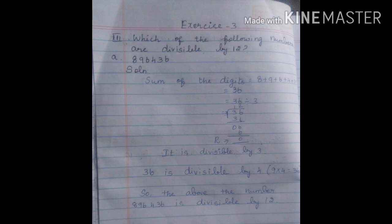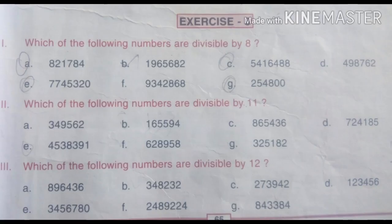Next 2 digits, 36. 36 is divisible by 4 because 9 times 4 is 36. So the above number 896436 is divisible by 12. So today your homework is Exercise 3, Page number 65, Roman 3 B and C.